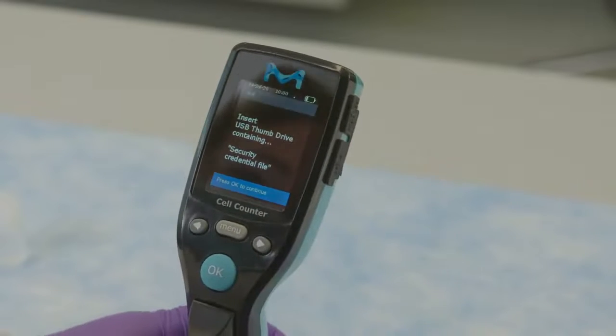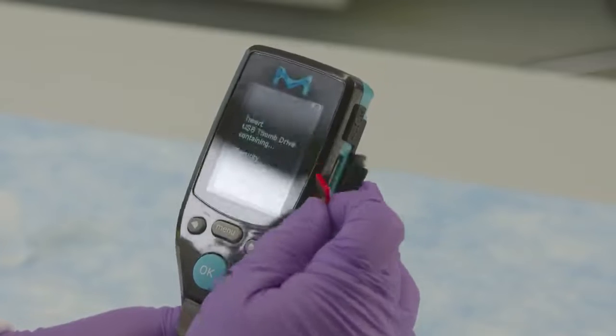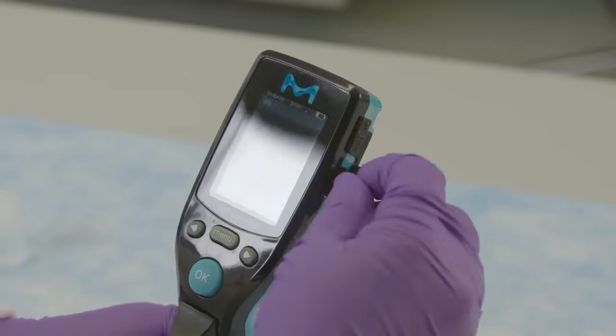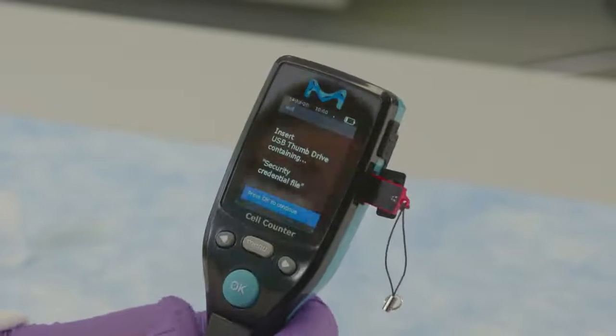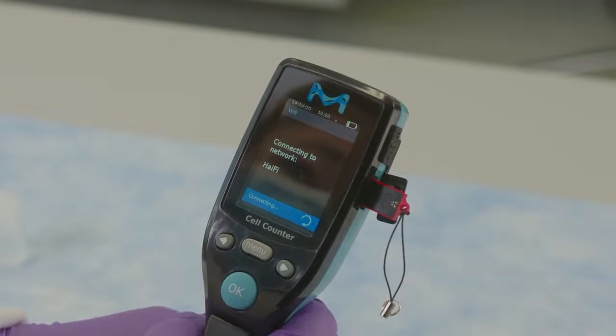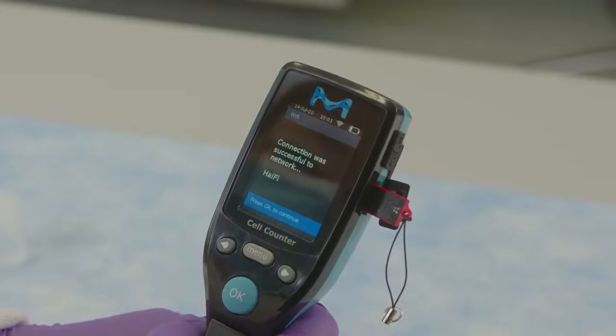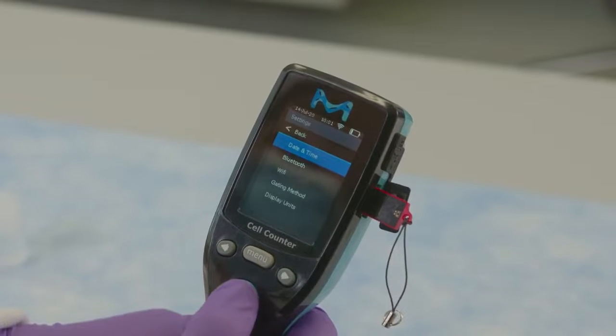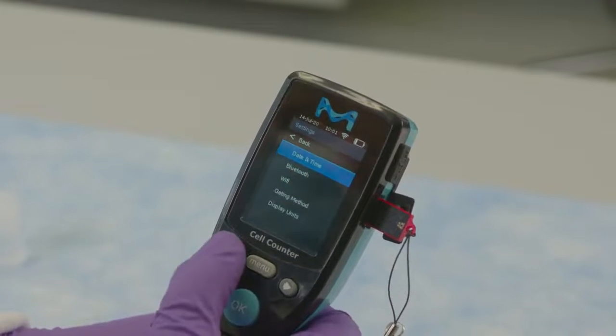When prompted, insert the USB flash drive into the SEPTOR 3.0 instrument USB port containing the credential file for the Wi-Fi configuration. When connection is complete, the screen will confirm successful connection. Press the OK button to return to the settings menu and remove the USB flash drive.